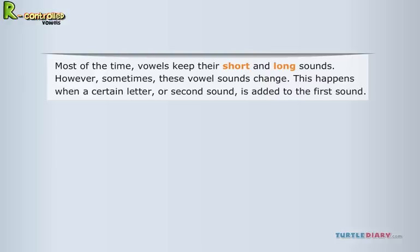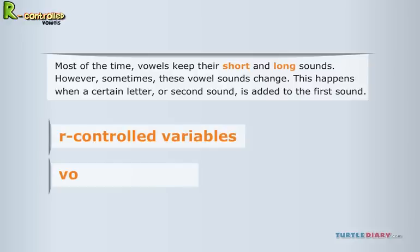When this happens, the two letters morph together to make a new sound. Depending on how they morph together, these new sounds could be R-controlled variables, vowel digraphs, or diphthongs.